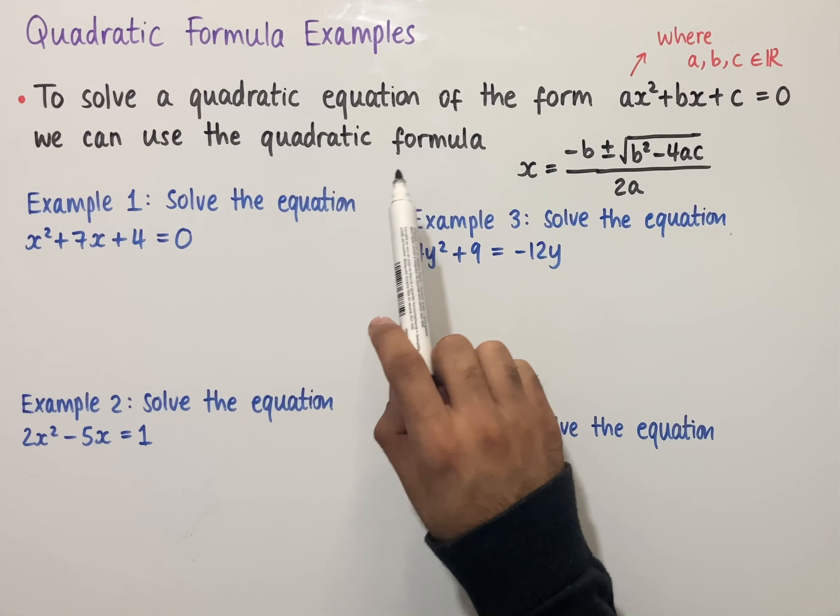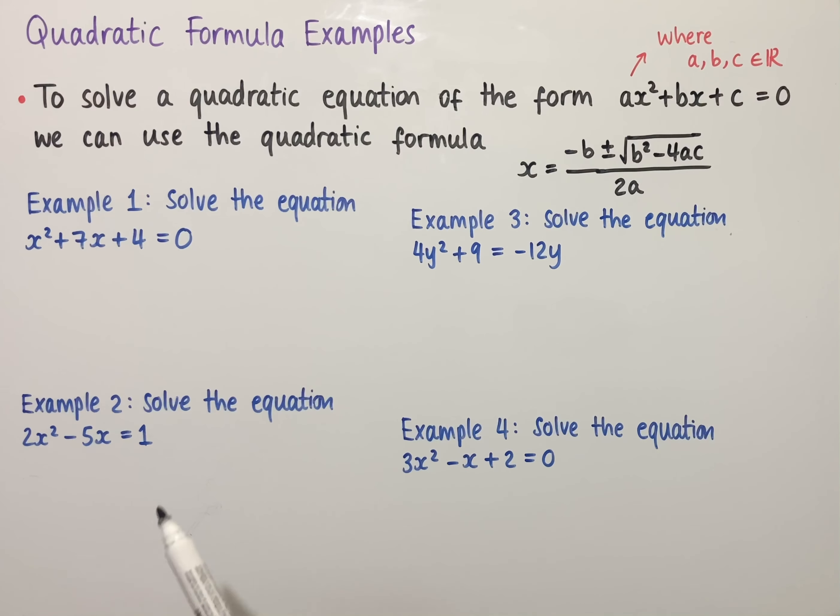Let's look at examples of using the quadratic formula. To solve a quadratic equation of the form ax² + bx + c = 0, where a, b and c are real numbers, we can use the quadratic formula, which is x equals minus b plus or minus the square root of b² minus 4ac, all divided by 2a. This method is particularly useful when we're trying to solve quadratic equations which are not easily factorized. So let's look at some examples of where we can use the quadratic formula.